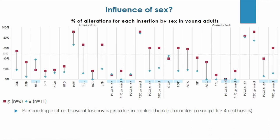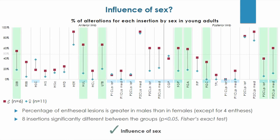Here we test the influence of sex on enthesial changes, and in order to exclude the impact of age on this analysis, we consider only young adults. For most entheses, the percentage of lesions is higher in males, shown in red, than in females, shown in blue. Three entheses of the forelimbs and five of the posterior limb show percentages of alteration significantly different between sexes. We can conclude that there is a sex-linked effect on the development of modifications, particularly for eight entheses, and generally males show more modifications than females. For the moment, even if we know that there is weak sexual dimorphism in horses, we cannot give a precise explanation for this result.